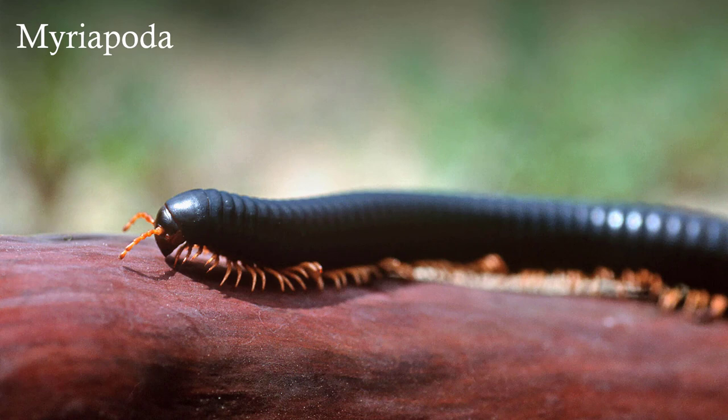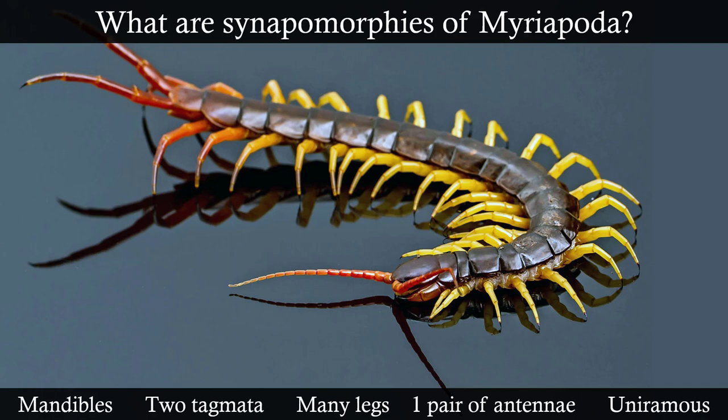One of the smaller subphyla within Myriapoda are the fascinating myriapods. Myriapods are a relatively small group, but there are still dozens of species, primarily centipedes and millipedes. There are two classes within Myriapoda: Chilopoda, which are centipedes, and Diplopoda, which are millipedes. How do we distinguish myriapods from chelicerates, hexapods, and crustaceans? Here you can see a giant centipede — you notice right away that it has many more legs than other arthropods, sometimes over a hundred.